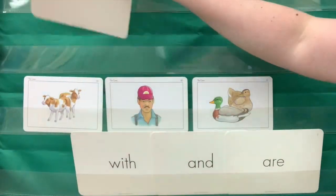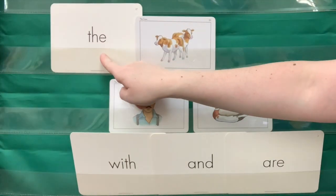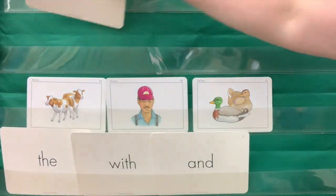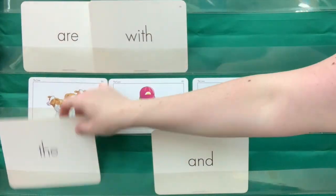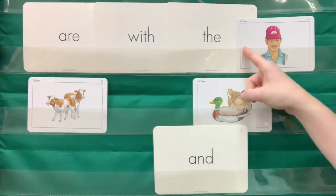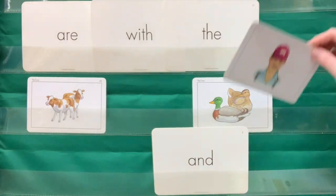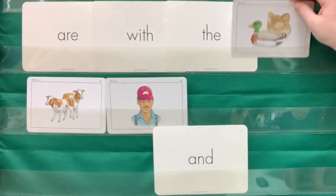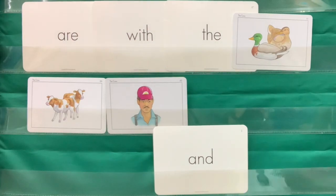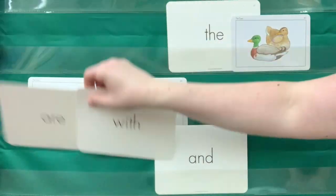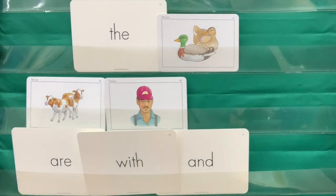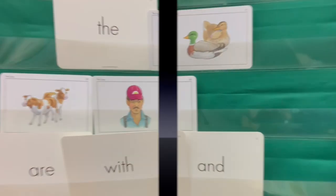Can you read this sentence? The cows. What about this one? Are — with — the — farmer. What if I switch this with this? Are — with — the — ducks. Now what does this say? The ducks. You guys read all of the sentences! Yay!